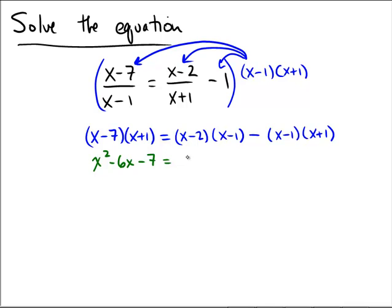Equals x times x, x squared, minus 2 minus 1 would be minus 3x, and then plus a 2. And then here, be careful, it's minus, so I'm going to put some extra parentheses around this so I don't forget to distribute later. This one, conveniently, is a difference of squares form, so I can just go x squared minus 1.